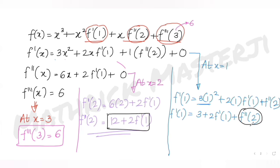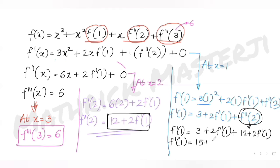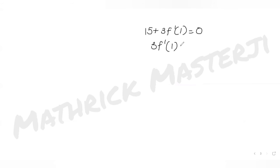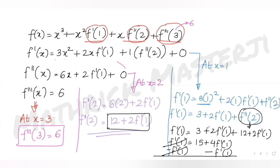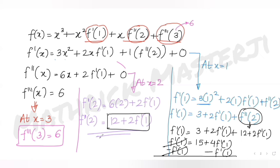Simplifying: f'(1) = 15 + 4·f'(1). Subtracting f'(1) from both sides: 0 = 15 + 3·f'(1), so 3·f'(1) = −15, giving f'(1) = −5. Substituting back: f''(2) = 12 + 2·(−5) = 12 − 10 = 2.